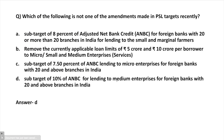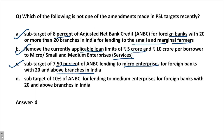MCQ: Which of the following is NOT one of the recent amendments made to priority sector lending targets? Options: (A) Sub-target of 8% of ANBC for foreign banks with 20 or more branches for small and marginal farmers, (B) Remove the loan limits of 5 crore and 10 crore for services sector MSMEs, (C) Sub-target of 7% to micro enterprises for foreign banks with 20+ branches, (D) Sub-target of 10% for lending to medium enterprises for foreign banks with 20+ branches. Answer: D — only three amendments were made.